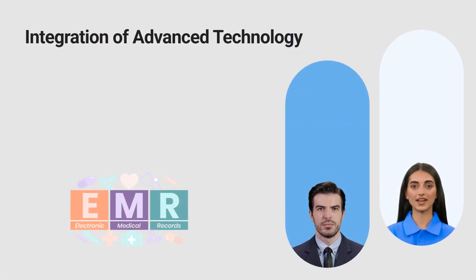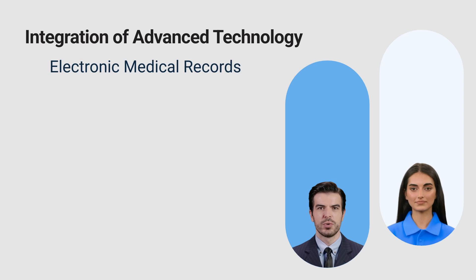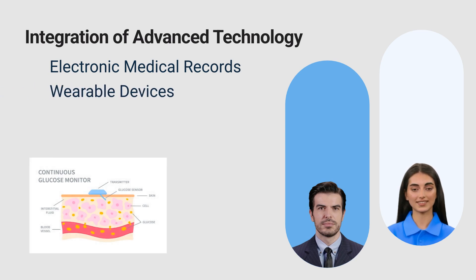One of the most transformative aspects of the E6 R3 guidelines is the enhanced integration of advanced technology. While the use of technology in clinical trials is not new, the updated guidelines formalize and expand its role significantly. For example, the new guidelines emphasize the use of electronic medical records, or EMRs, to streamline data collection and analysis. This change is crucial as it allows for real-time data access and sharing across different sites, which improves the efficiency and accuracy of data handling. Additionally, the guidelines highlight the adoption of wearable devices. These devices enable continuous monitoring of patient vitals and other important metrics, providing a richer data set that can enhance patient safety and trial outcomes.